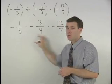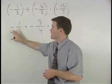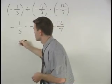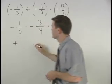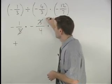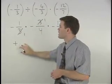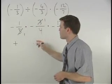So multiplying our first two fractions together, notice that we have a negative times a negative, which is a positive, and our threes cross cancel to one and one. So we have positive one over four.